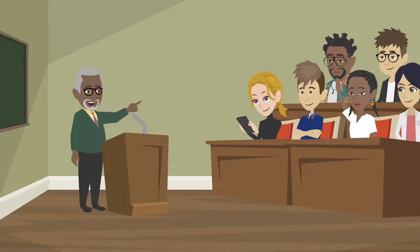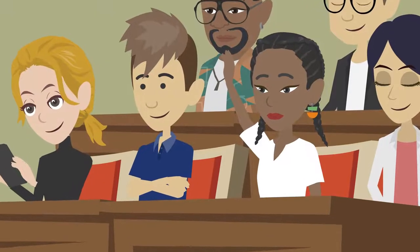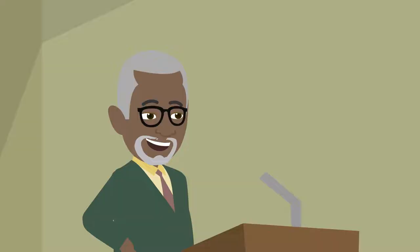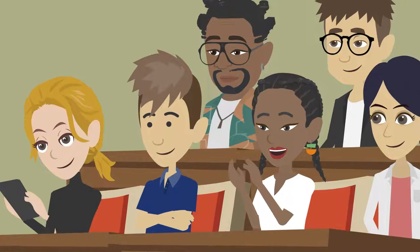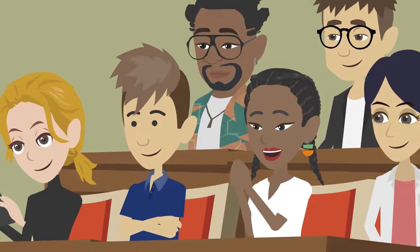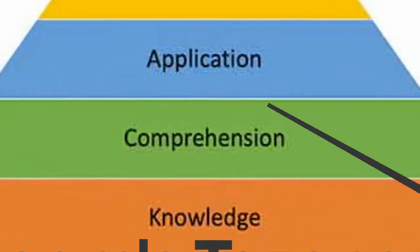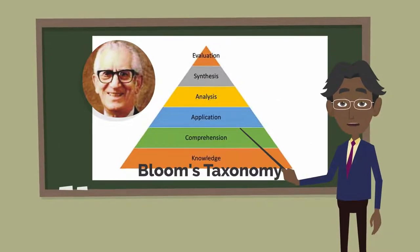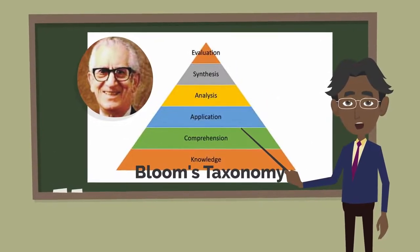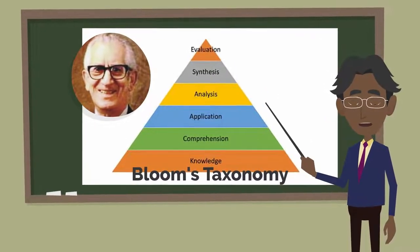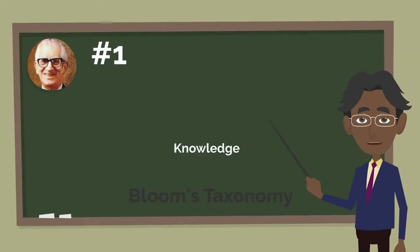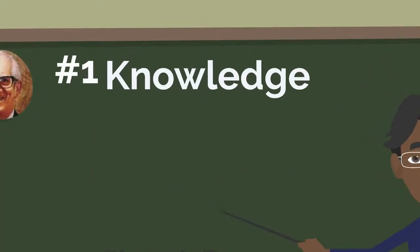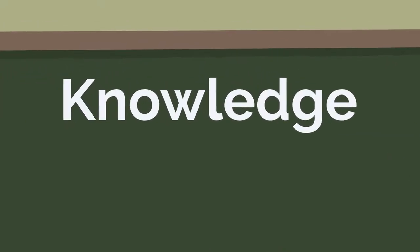Action verbs literally describe what students should be able to do with subject knowledge at a particular level within the Bloom's taxonomy structure. So, what are these different levels of learning? Let's find out. Number 1: the knowledge level.